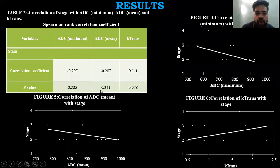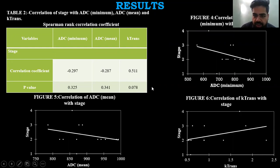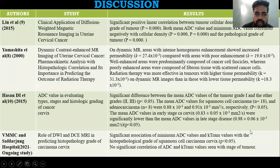Regarding correlation of stage with ADC and K-trans, there was no significant correlation of ADC values with K-trans or staging, as P-values did not come out to be less than 0.05. Scatter plots confirmed no significant correlation between ADC values and staging, or between K-trans and staging.